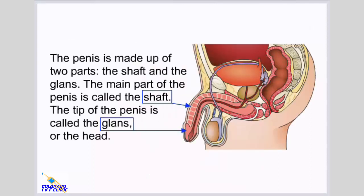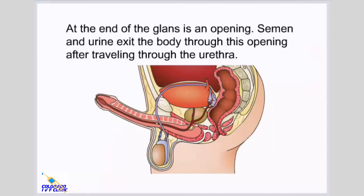The penis is made up of two parts: the shaft and the glans. The main part of the penis is called the shaft. The tip of the penis is called the glans, or the head. At the end of the glans is an opening through which semen and urine exit the body after traveling through the urethra.